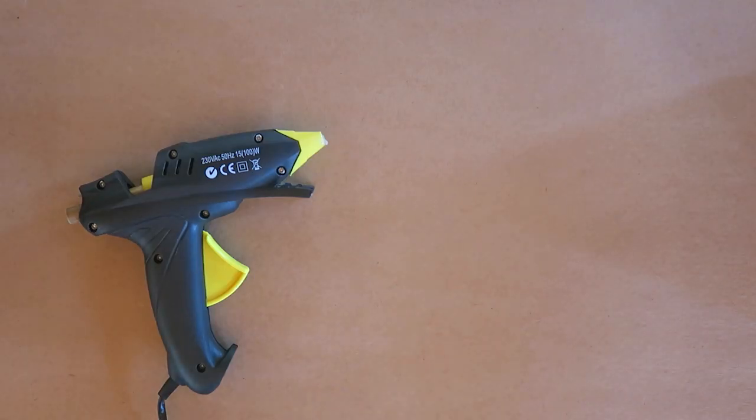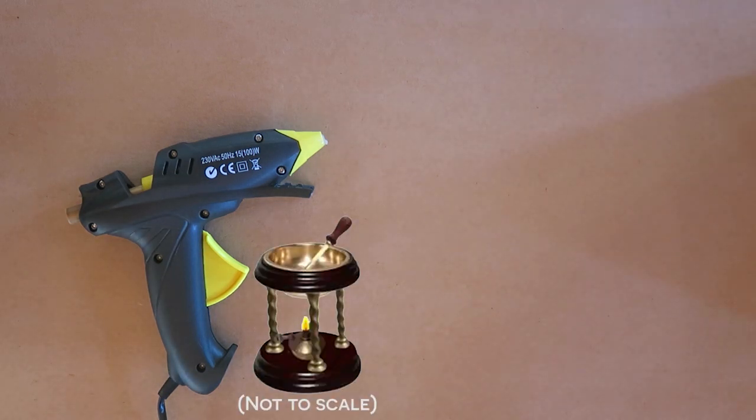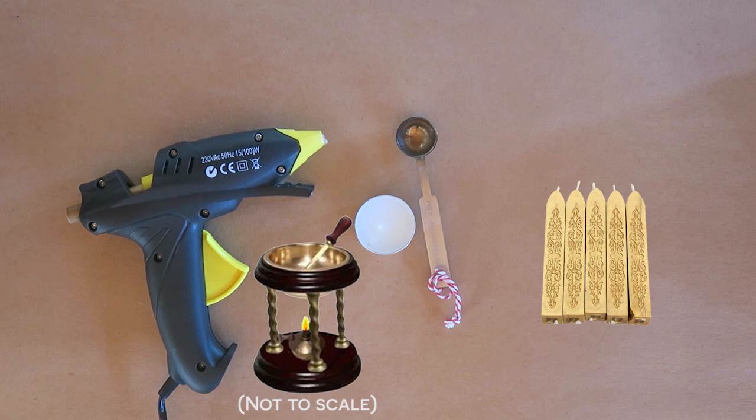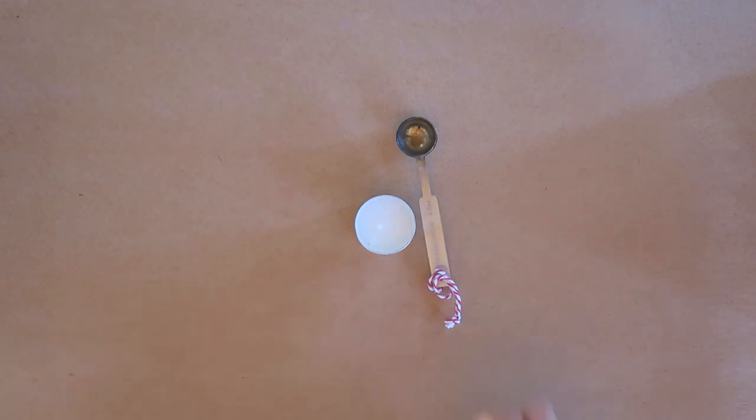There are many ways you can heat your wax. You can use a low temp glue gun, a melting pot, a melting spoon, or a traditional wax stick. I will be using a melting spoon along with a tea light candle for this one.